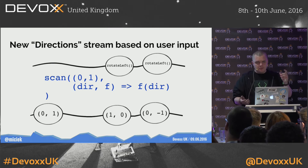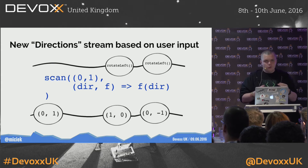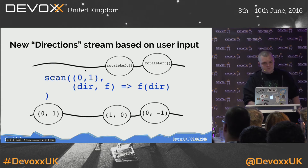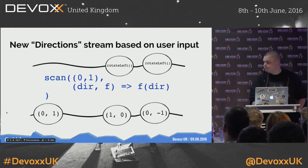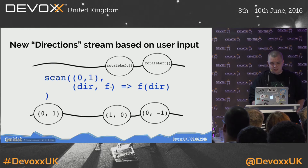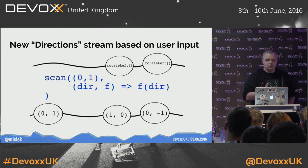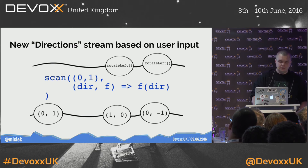We can create a new direction stream — the old one was just 0,1 each 100 milliseconds, but the new one will take user input into account. We use scan again, with initial accumulator value 0,1 as the direction. The accumulator holds functions from the actions stream. To accumulate functions, we just apply them to the current value. So whenever there's a rotate-left event, we execute that function passing the current direction 0,1, getting 1,0. Again rotate-left gives 0,-1. The direction the snake moves is being changed based on user input.